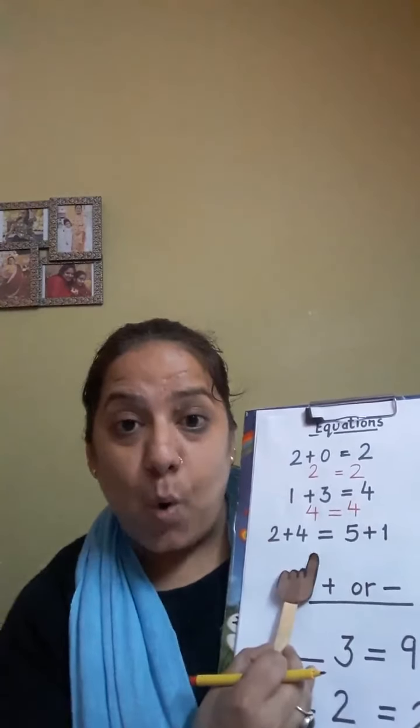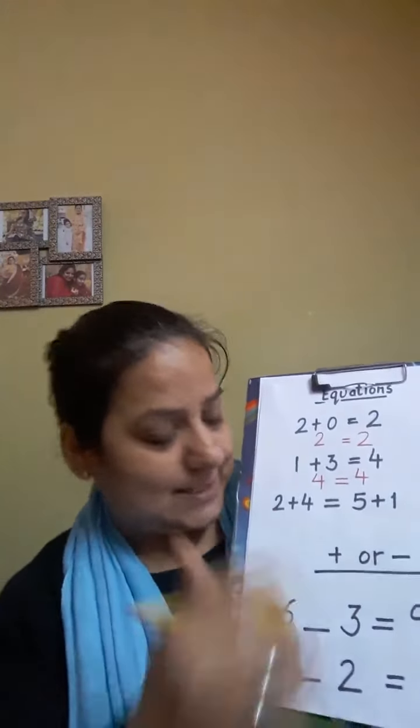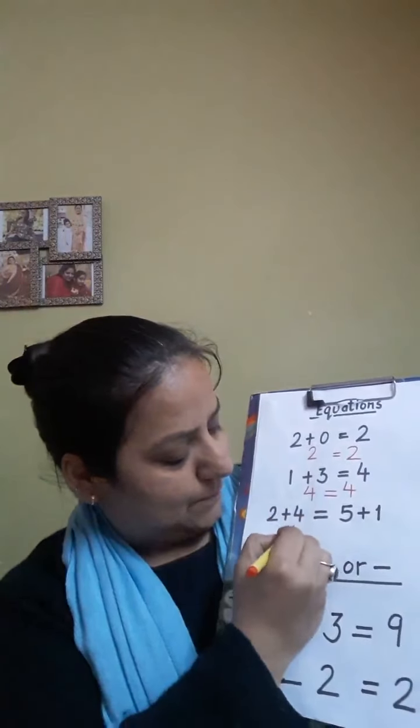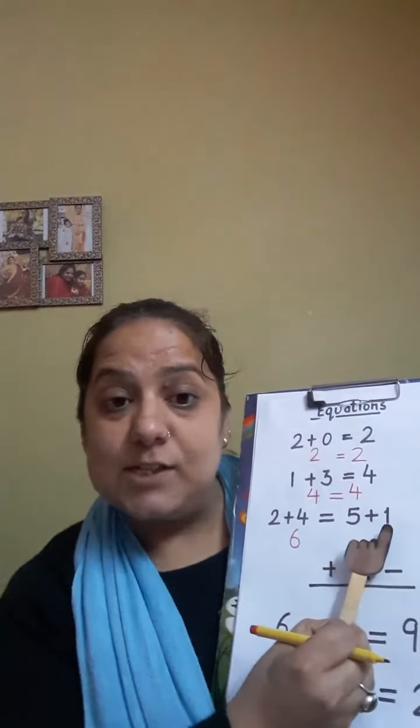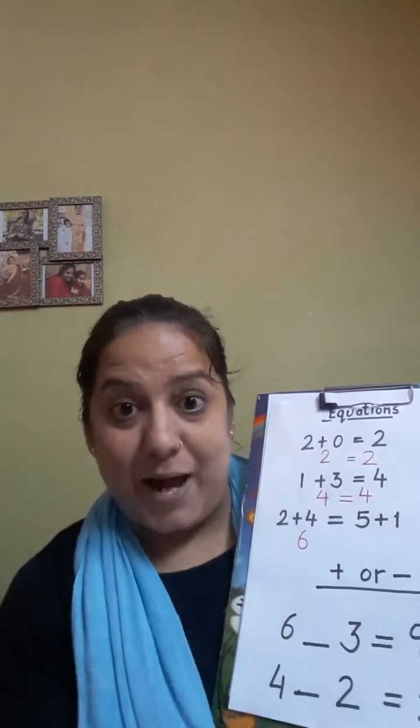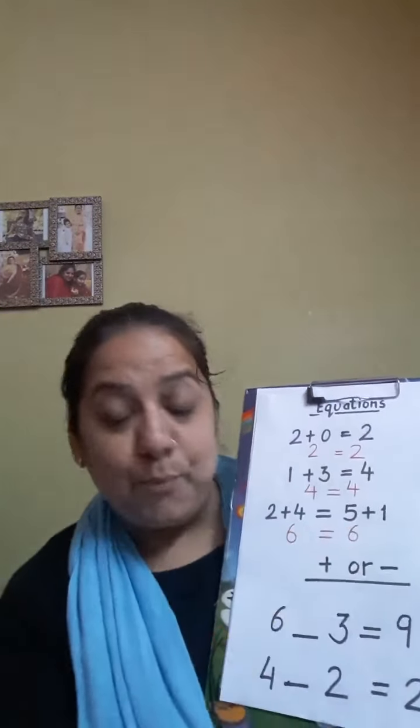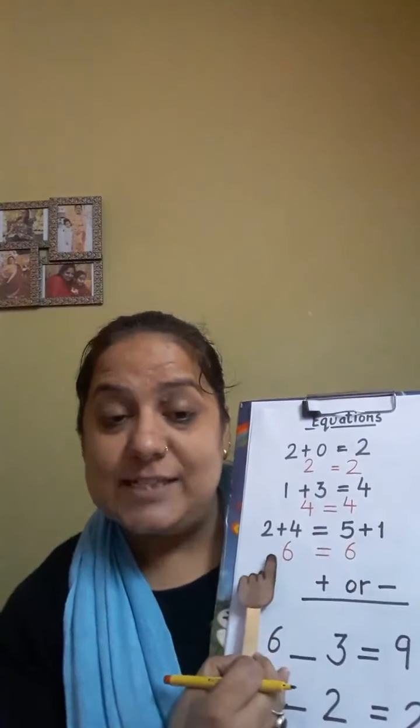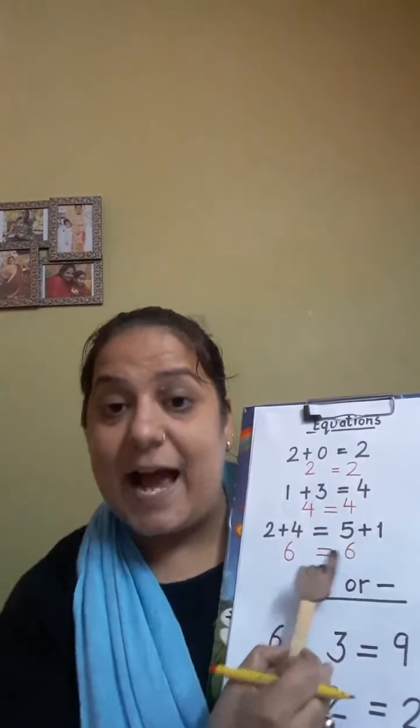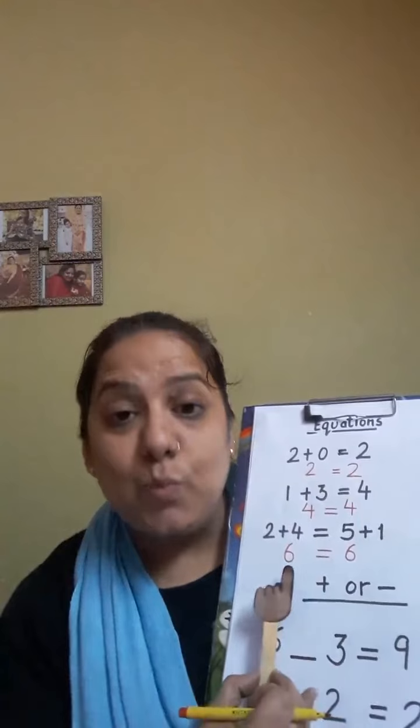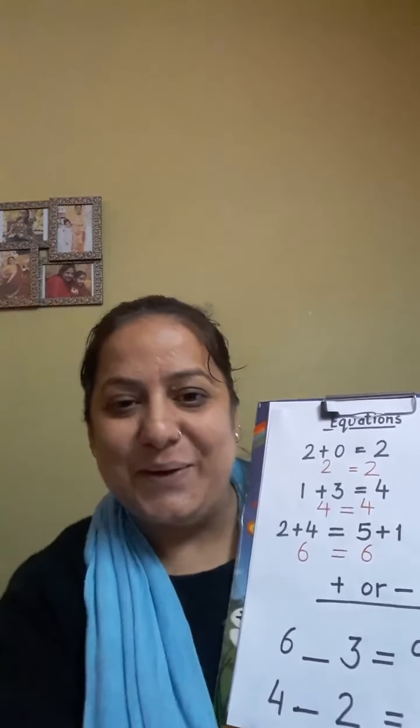2 plus 4. Yes, we get 6. Equals to 5 plus 1. Yes, you're right. It's again 6. So both the sides, left hand side and the right hand side have the equal value. Very good.